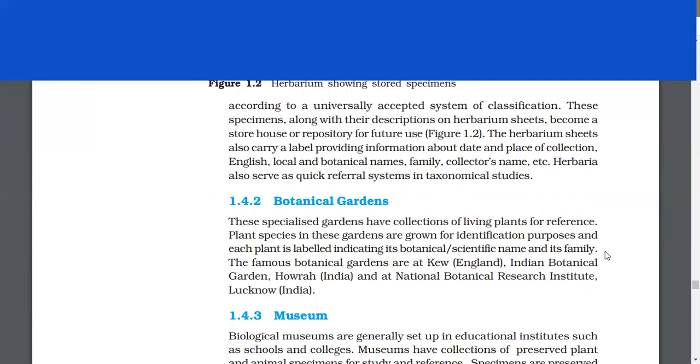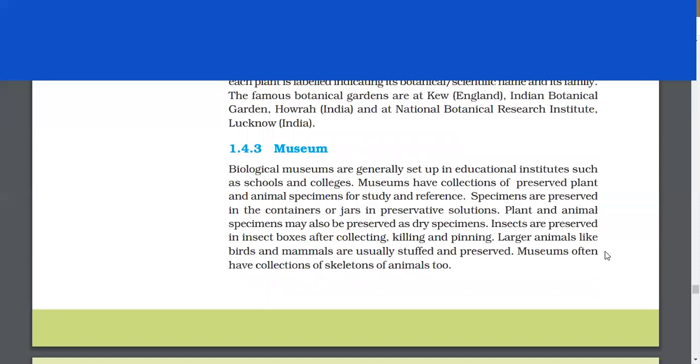Museum. Biological museums are generally set up in educational institutes such as schools and colleges. Museums have collections of preserved plant and animal specimens for study and reference. Specimens are preserved in containers or jars in preservative solutions. Plant and animal specimens may also be preserved as dry specimens. Insects are preserved in insect boxes after collecting, killing, and pinning. Larger animals like birds and mammals are usually stuffed and preserved. Museums often have collections of skeletons of animals too.